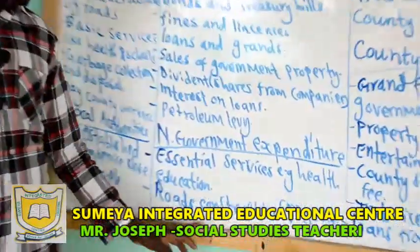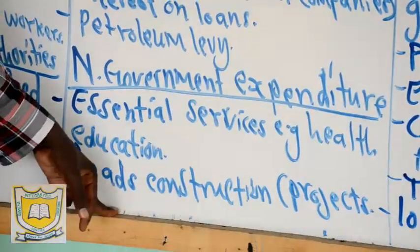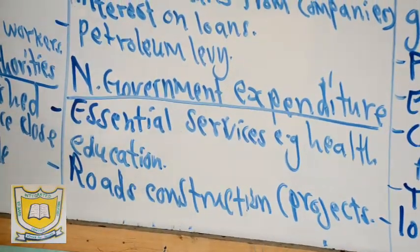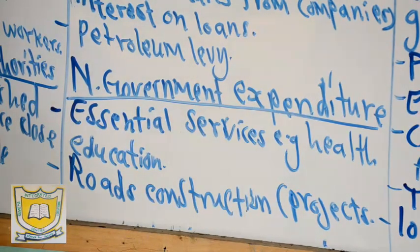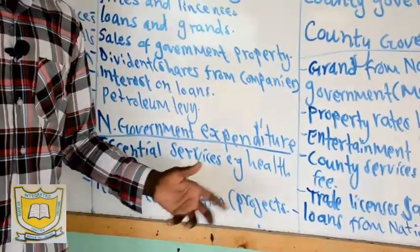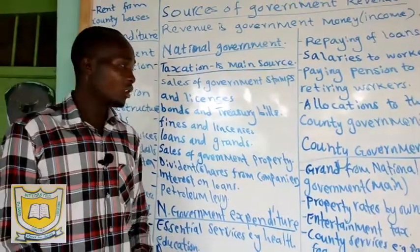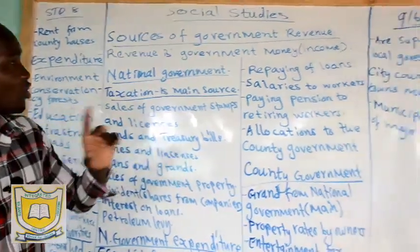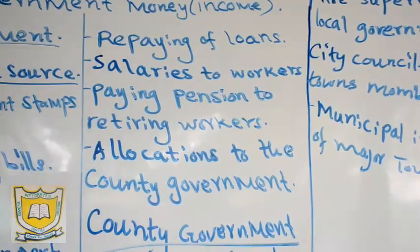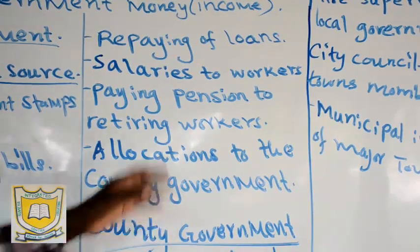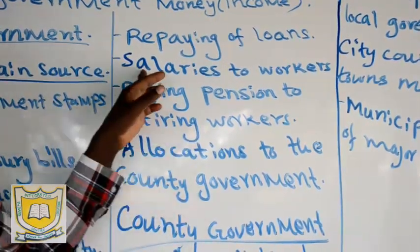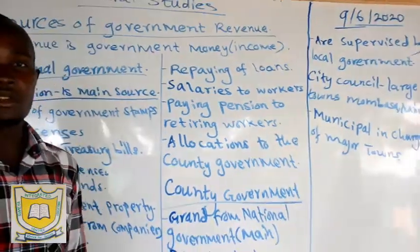Number two: projects like road construction. Roads construction is another area where the government allocates funds. We also have the railway — billions have been used to build the railway. Other projects include building of bridges along rivers. The government also uses this money to repay loans taken from abroad, from other countries, from the Central Bank of Kenya, from the World Bank, and so on.